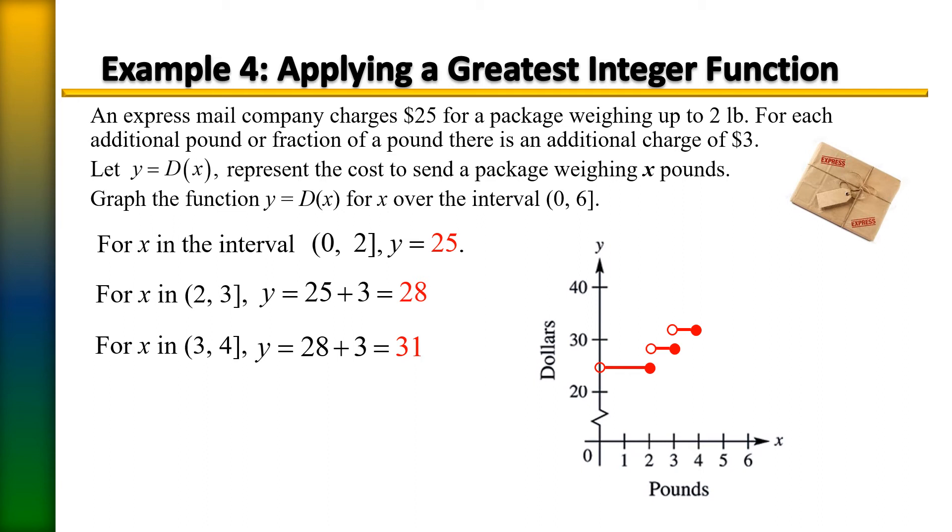So what if a package weighs more than 4 pounds? If the package is between 4 and 5 pounds, we have to add another $3 to that. And that's that interval of 4 to 5, you're going to pay $34. So we can move our bar up to 34 and let's graph that constant between 4 and 5.